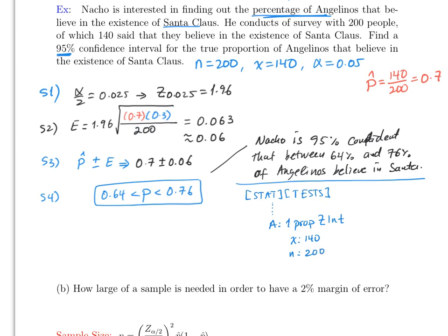Then it will ask you to enter x, which is 140, to enter n, which is 200, and then the confidence level, which is 0.95. Then once you do that, just click enter.